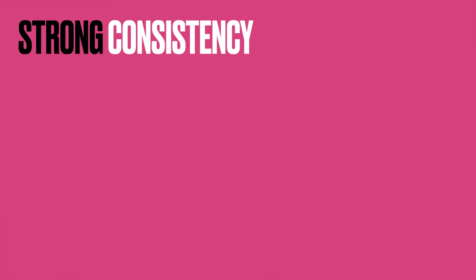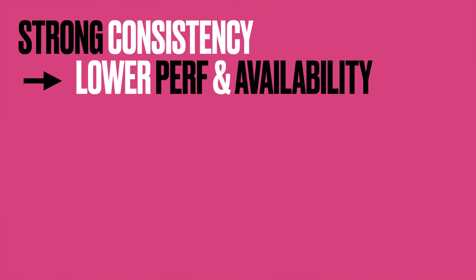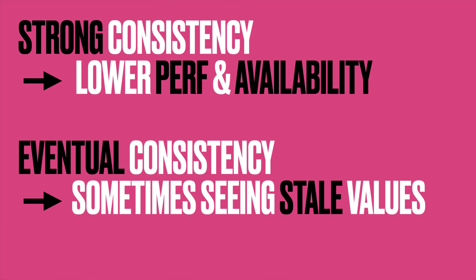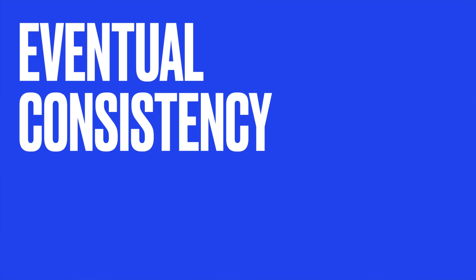In an interview, I would describe both approaches and discuss the pros and cons for each. We could have strong consistency at the cost of lower performance and availability, or we could have eventual consistency at the cost of users sometimes seeing stale and inconsistent values. We have to consider which option has the least negative impact on the user experience. In my opinion, seeing a slightly stale view count will not bother the user as much as waiting for that value and seeing nothing at all, so in that case we would go with eventual consistency.